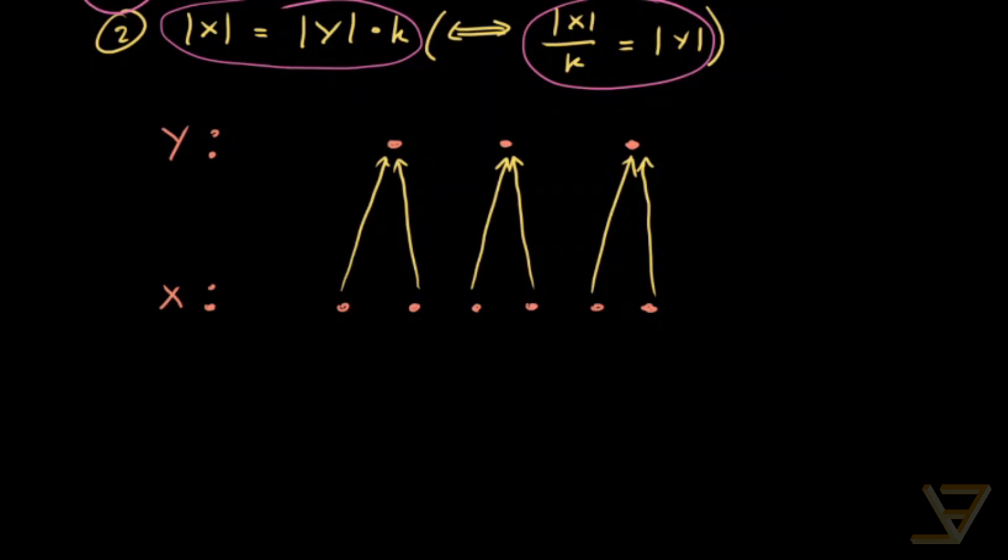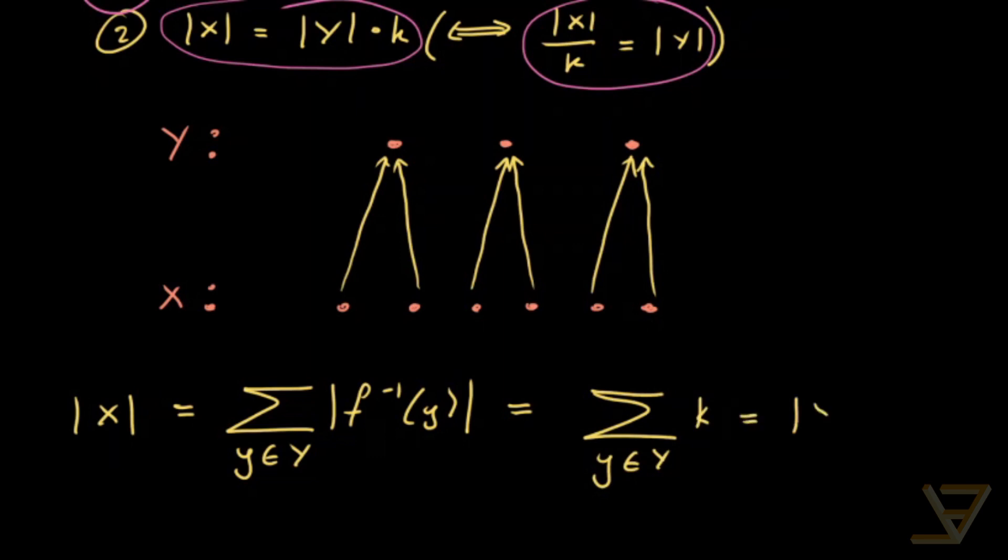And formally speaking, what's going on is that we're taking the sum of the cardinalities of the pre-images of the elements of Y. So we're taking a sum over little y in capital Y, and that is equal to the cardinality of X. That's not too hard to prove. And by assumption, this is equal to the sum over all the little y's with the sums being k. And that's just equal to the cardinality of Y times k. And that proves the k-to-1 correspondence principle.